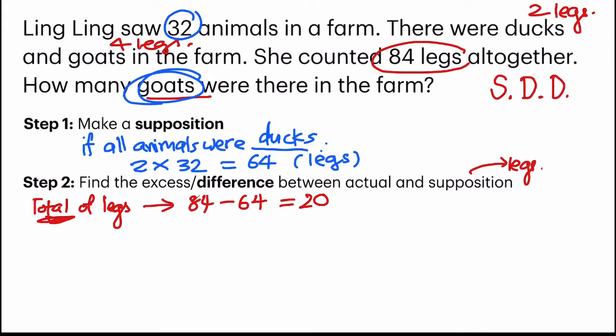Now, the second difference is individual difference of legs. We're going to look at the duck and the goat. Remember, the goat has four legs, whereas for a duck, there's only two. So, we get a difference of two. I can take it as total difference and individual difference.